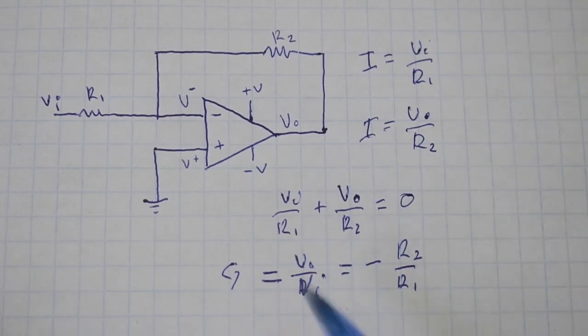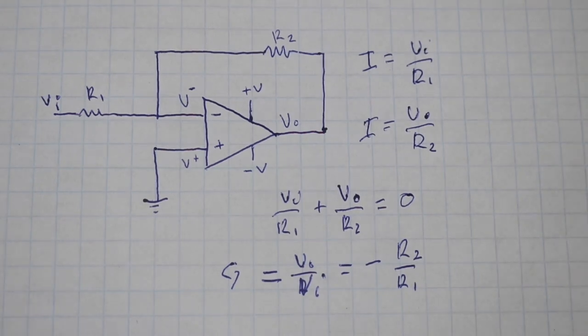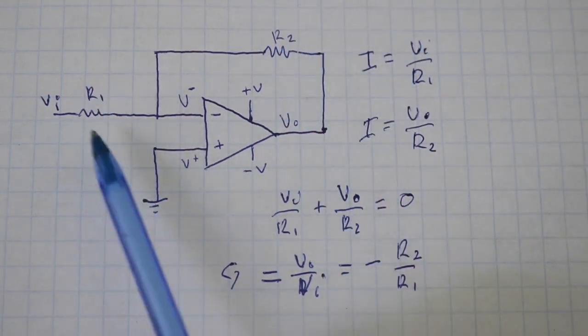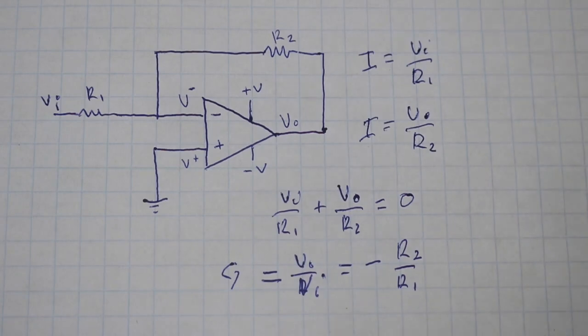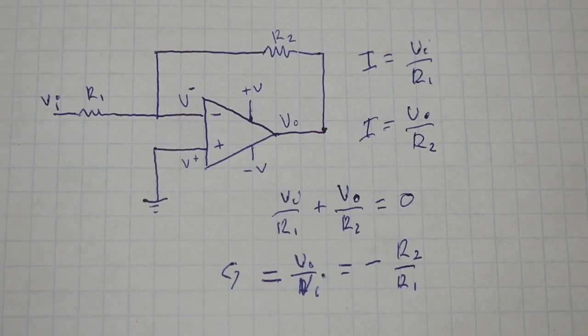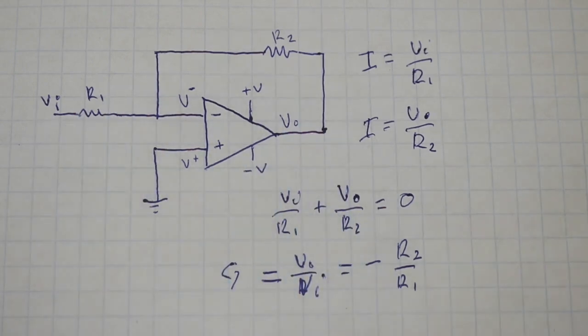Therefore, this means that we can choose to have any gain that we want simply by choosing the resistors 1 and 2. For example, if you want a gain of 100, you put a resistor of 100 ohms here and a resistor of 1 ohm here, or a 400 ohm resistor here and a 4 ohm resistor here, or any combination that divided gives you 100 or any other value. And the minus sign means that the voltage at the output has opposite sign to the voltage at the input.